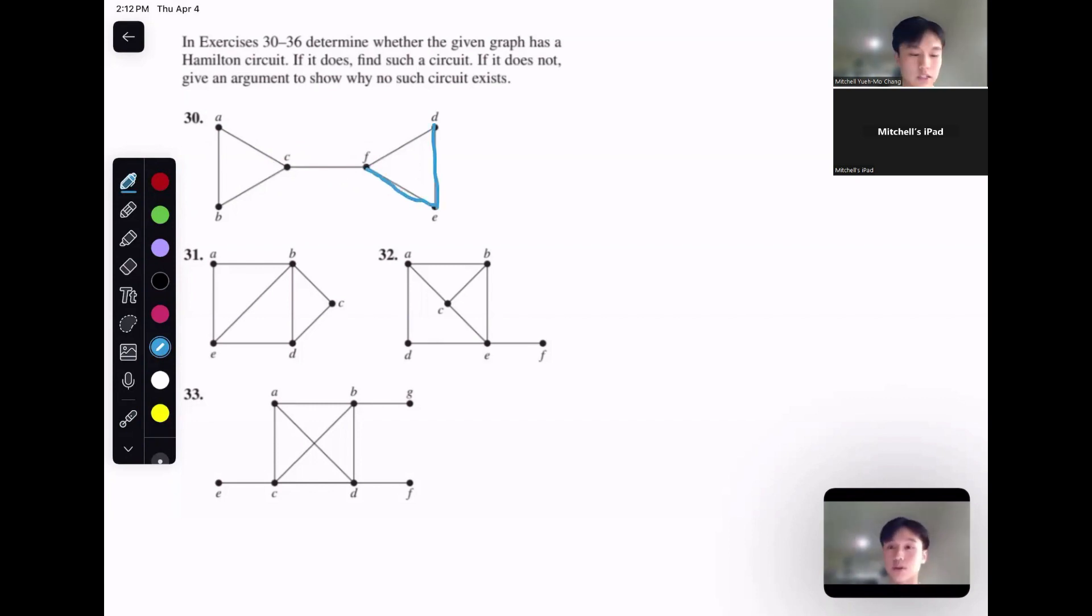So in this case, we started at D, we then visited E, then F. And if we want to visit the entirety of the left-hand side of the graph, like a Hamiltonian circuit requires, we'd need to leave this right-hand side and do everything else. But then from there, we're stuck. We've visited every other node already, and we can't exactly get back.